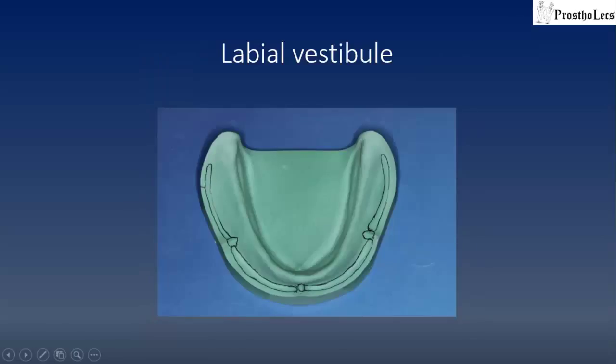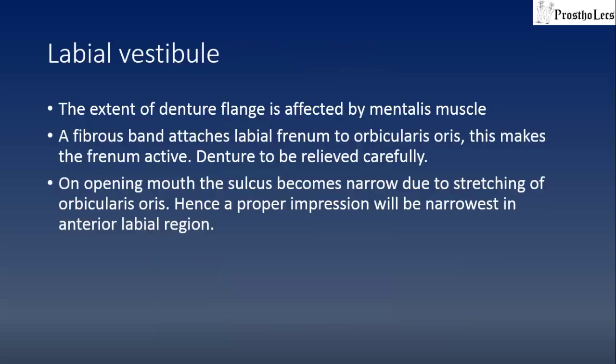The labial vestibule extends from the buccal frenum of one side to the buccal frenum of the other side and is divided into left and right halves by the labial frenum. The extent of the denture flange is affected by the mentalis muscle. A fibrous band attaches the labial frenum to the orbicularis oris muscle, making the frenum active, and the denture must be relieved carefully in this region. On opening the mouth, the sulcus becomes narrow due to stretching of orbicularis oris, so the proper impression will be narrowest in the anterior labial region.